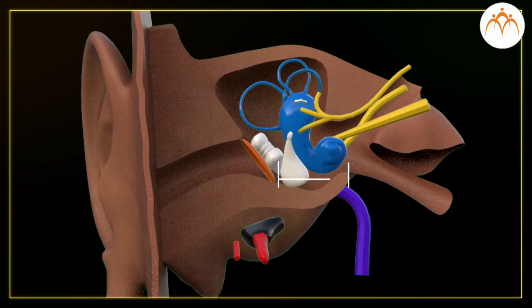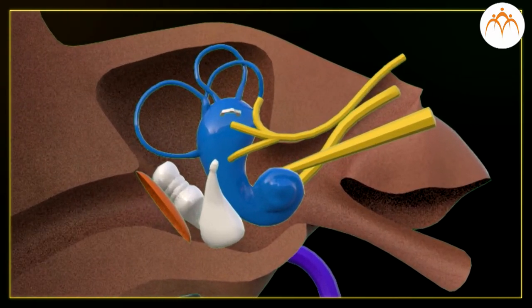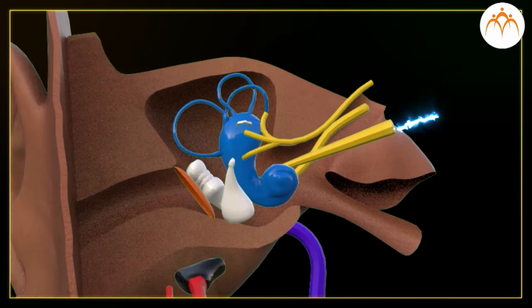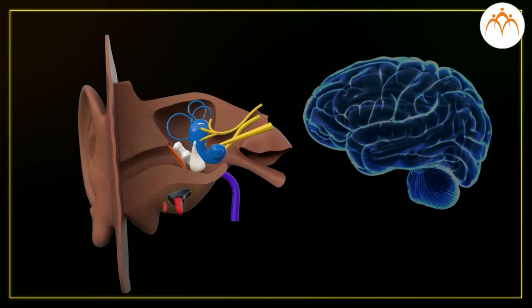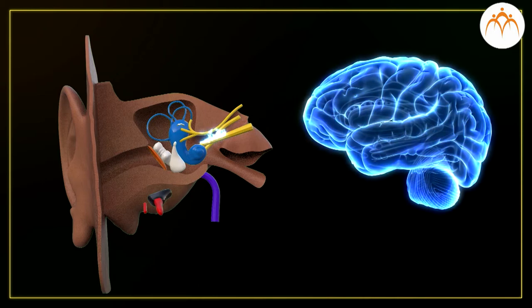Inner ear. The auditory nerve connects the inner ear to the brain. The inner ear has a structure resembling the shell of a snail — it is called the cochlea. The cochlea receives the vibrations coming from the membrane and converts them into electrical signals which are sent to the brain through the nerve. The brain analyzes these signals.